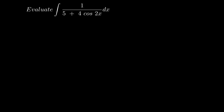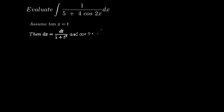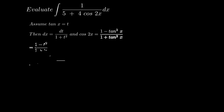How to solve this? We know, if the integral is in the dx by a plus b cos x format, we should take tan(x/2) as t. Here we see cos 2x in the denominator. Hence, we have tan x equals t. So dx equals dt by 1 plus t squared. Further, cos 2x turns into 1 minus t squared by 1 plus t squared.